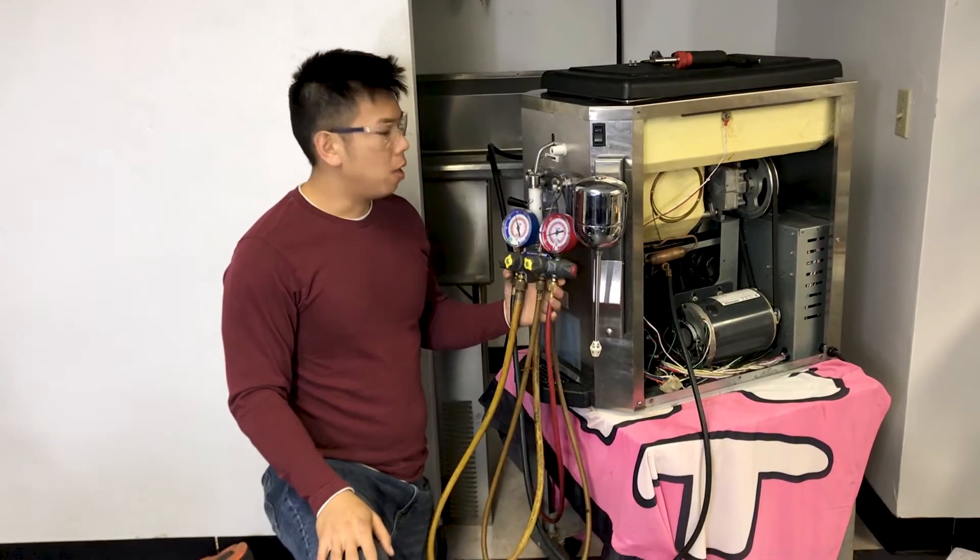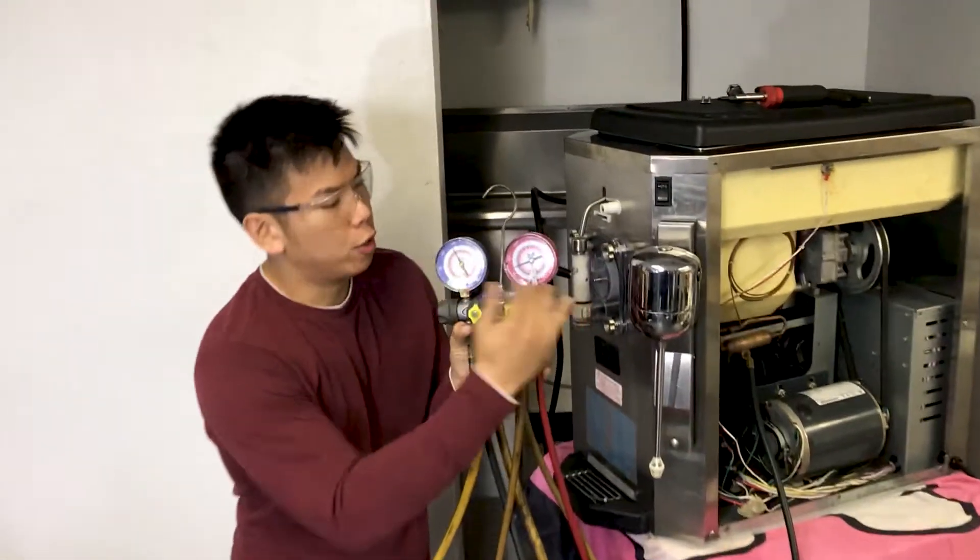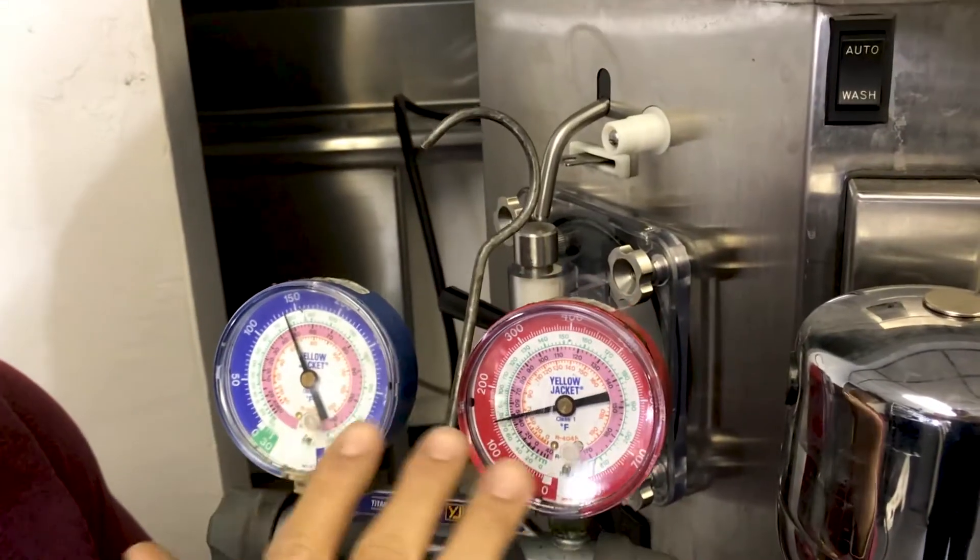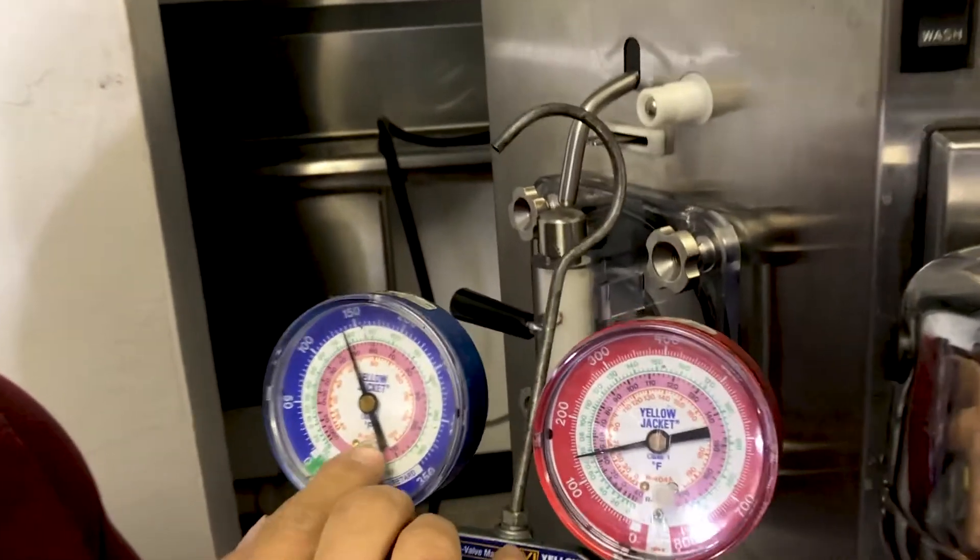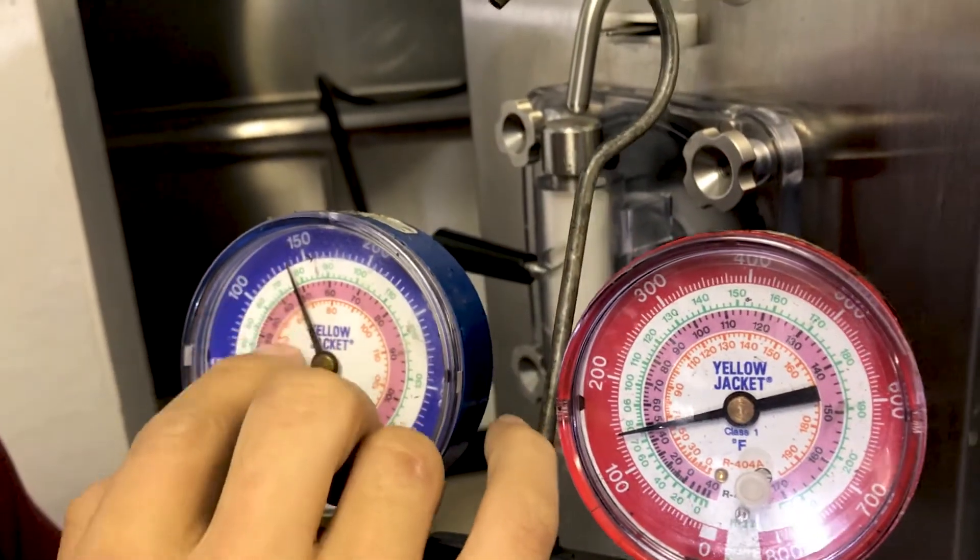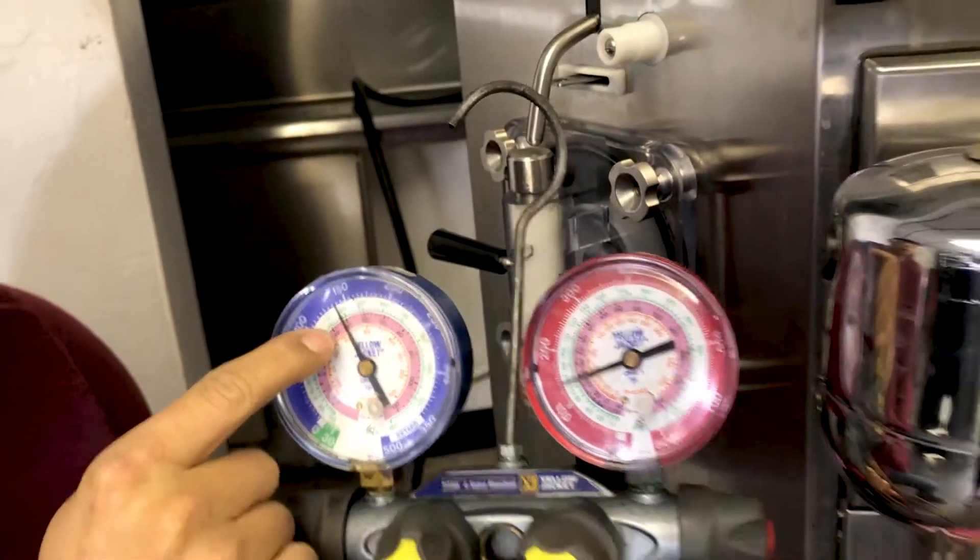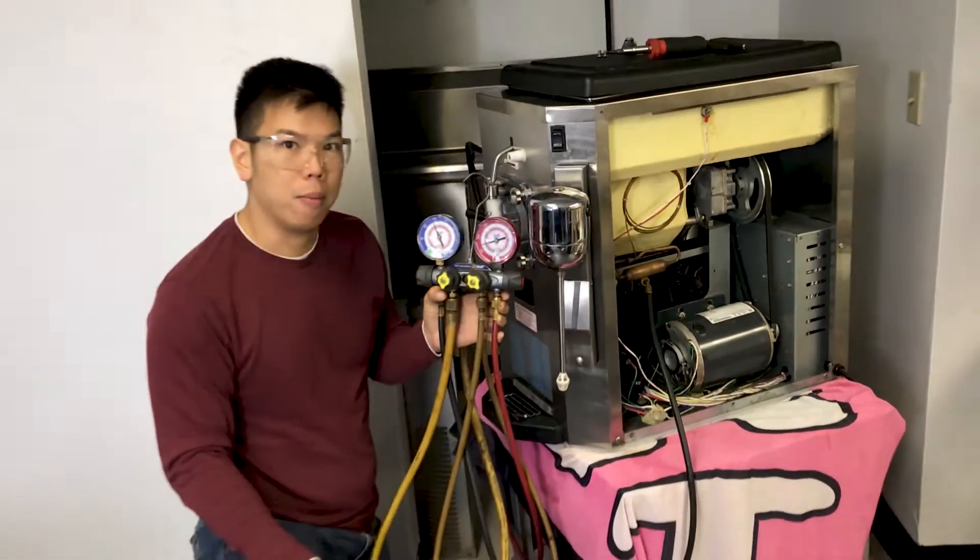Alright, once you have your gauges hooked up with the machine not running, you want to make sure your static pressures are around this. So our ambient temperature here is around high 60, low 70s right now. So if you look at the 404 section here, it looks about right because the pressure is around 140, and it correlates with the temperature of what it would be at for 404A. So from here, you turn on the machine, and we're going to check the running head pressures.